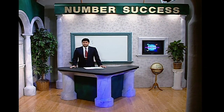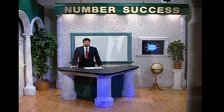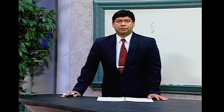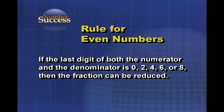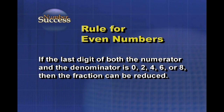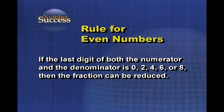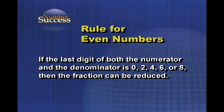Divisibility rules for reducing fractions. Here are some rules to help you reduce fractions. Rule for even numbers: if the last digit of both the numerator and the denominator is 0, 2, 4, 6, or 8, then the fraction can be reduced.